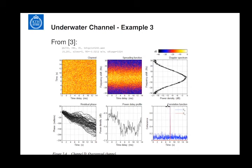The third example is an overspread channel. You can barely even see the channel structure because everything is so mixed — it's like a perfect mix of different echoes. You can only see that there is some energy in a band, but the individual contributions are indistinguishable. This is a type of channel that most people would say is impossible to communicate through.